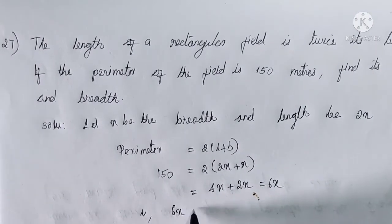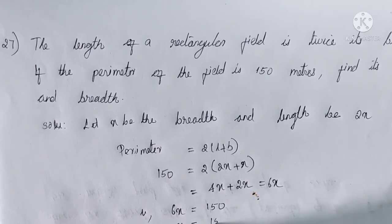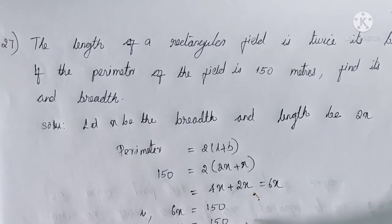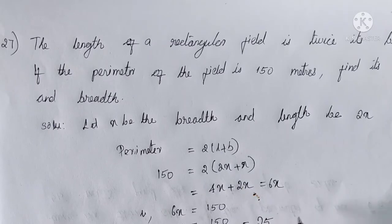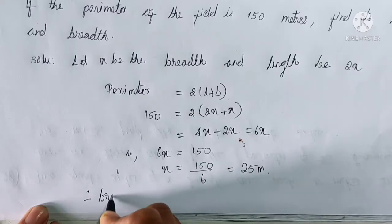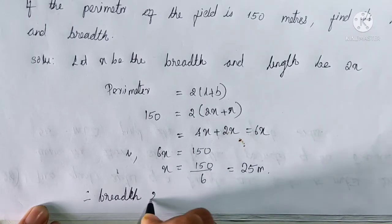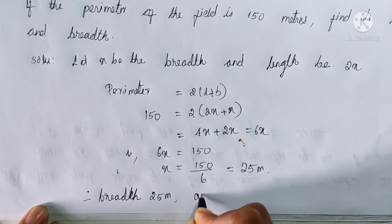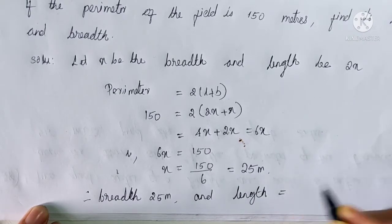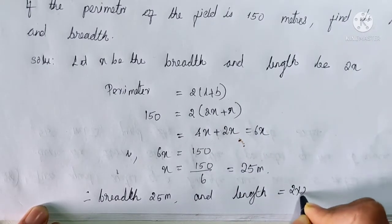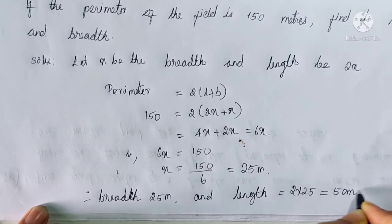That is, 6X is equal to 150. Therefore X is equal to 150 divided by 6, and this is equal to 25. If X is equal to 25, X is the breadth — that is 25 meters. So breadth is equal to 25 meters, and length is equal to 2 into X, that is 2 into 25, which is equal to 50 meters.